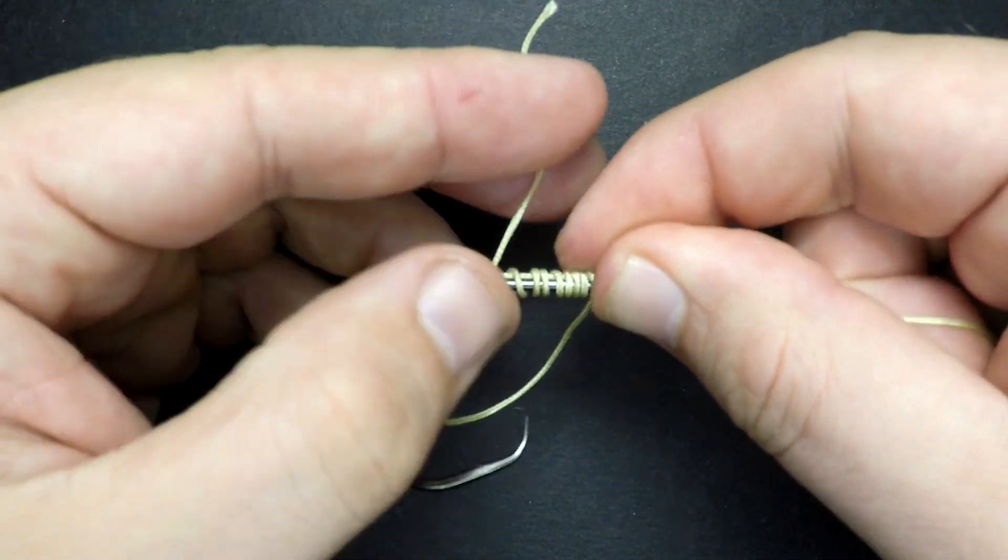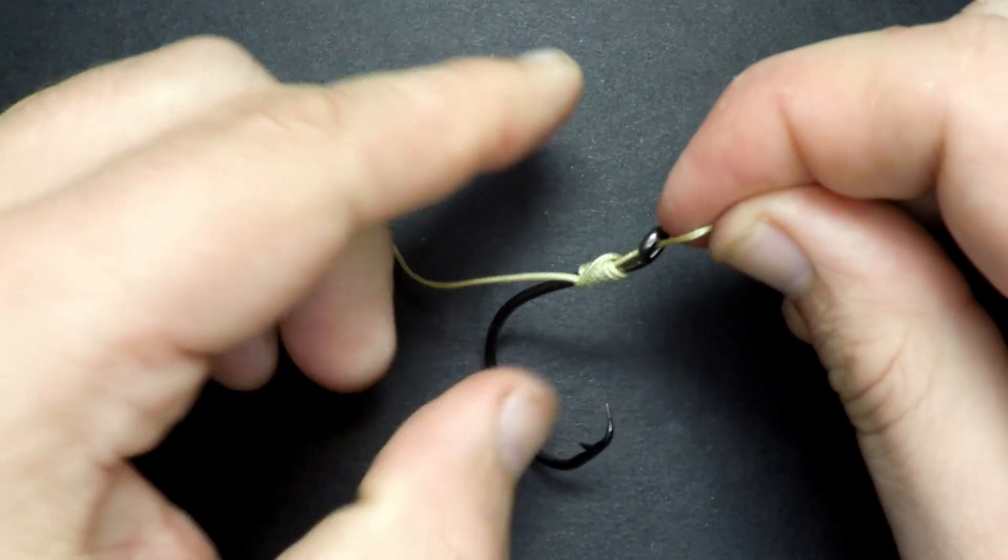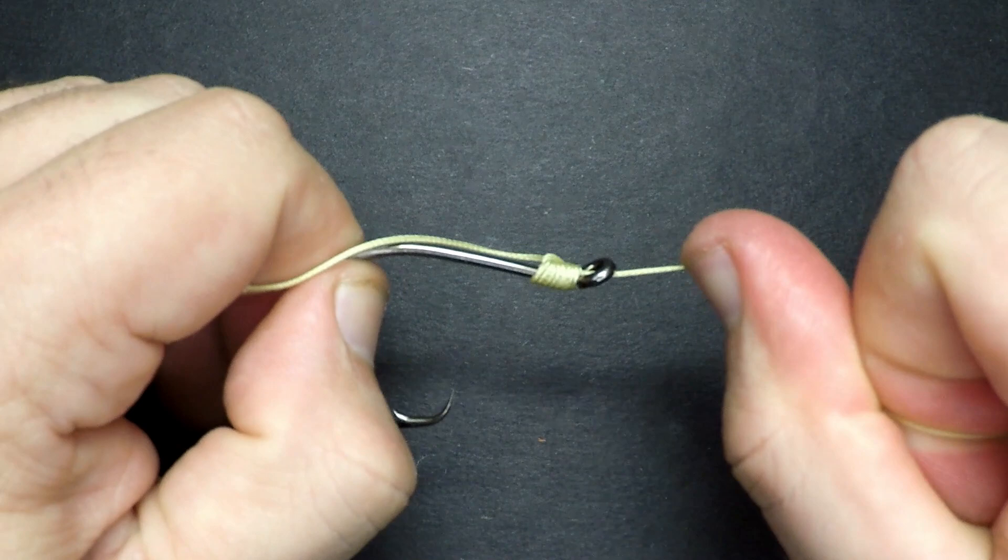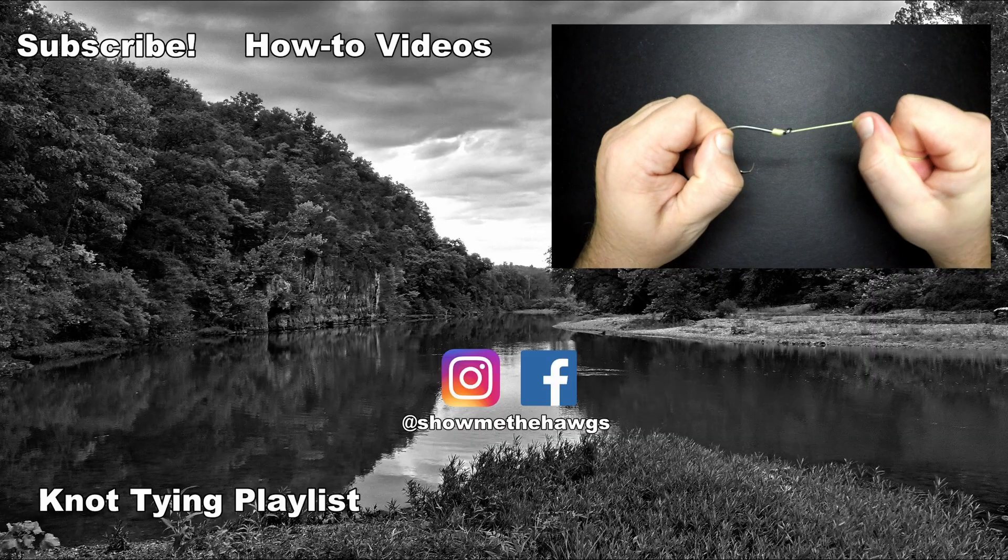After making your wraps, pull on the main line to close the loop and then pull on the tag end to tighten the front of the knot. Now you can pull on the main line to bring the knot up snug against the eye, trim the tag end, and that completes the uni snell knot.